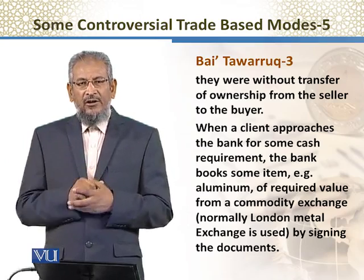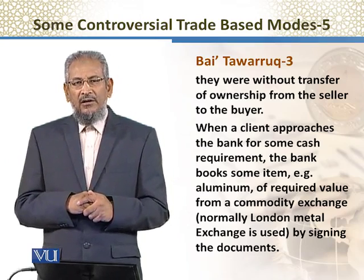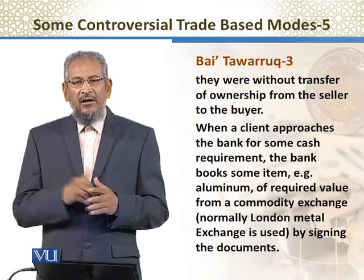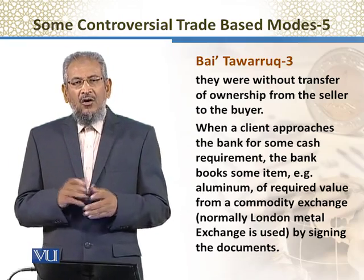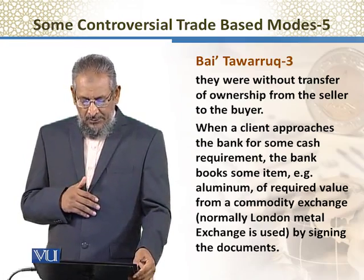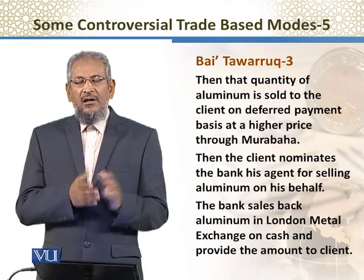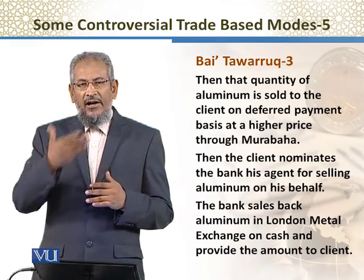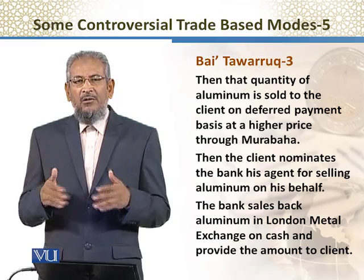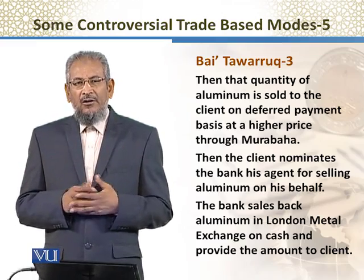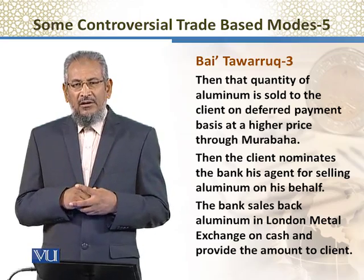Contract sign ہو جاتے ہیں اور وہ aluminium بینک کے نام پر book کر دیا جاتا ہے، اور اس کی payment بینک Metal Exchange کو کر دیتا ہے۔ پھر اس کے بعد بینک وہی aluminium client کو at a higher price فروخت کر دیتا ہے — مثلاً 100 million کے بجائے 110 million dollars کے عوض وہ چیز client کو فروخت کر دی جاتی ہے۔